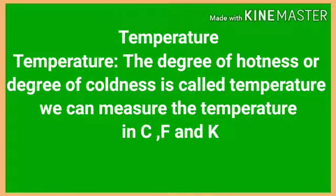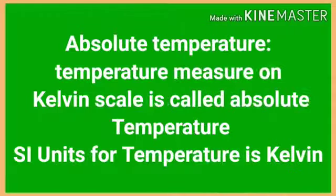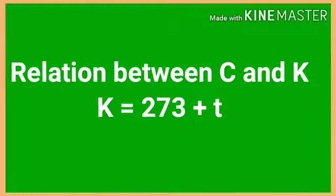The degree of hotness or the degree of coldness is called temperature. We can measure temperature with a thermometer, in degree Celsius or Kelvin. Temperature measured on the Kelvin scale is called absolute temperature. The SI unit for temperature is Kelvin. The relation between centigrade and Kelvin: temperature in Kelvin is equal to 273 plus degree centigrade, i.e., K = 273 + °C.